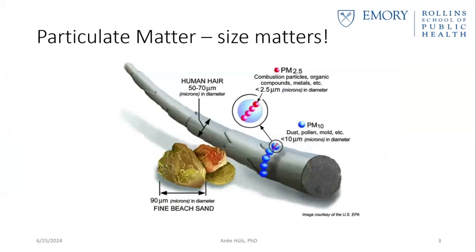The size of particles is directly linked to their potential for causing health problems. Traditionally, we divide particles into two main groups. PM10 is particles between 2.5 and 10 micrometers in diameter — a human hair is about 60 micrometers in diameter. PM2.5 is particles smaller than 2.5 micrometers. These particles are really, really small compared to a human hair or even fine beach sand.